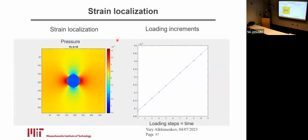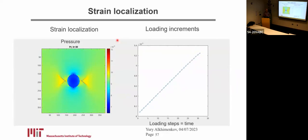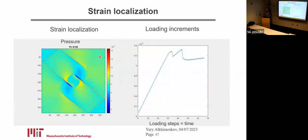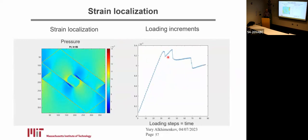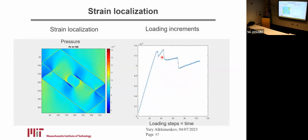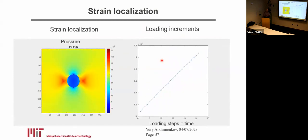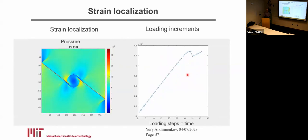Let's look again at this example where we apply strain increments and strain localization occurs. On the right, you can see the integrated stress in the vertical segment of the rock sample. Each stress drop can be interpreted as a particular earthquake — that's another interpretation of the figure on the right.